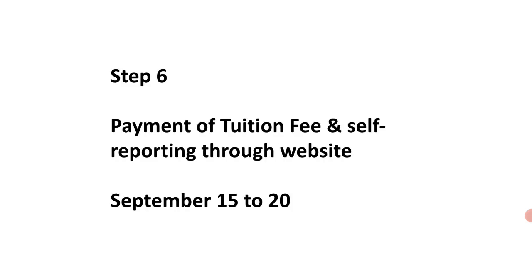After receiving your seat allotment order, you have to make payment of the tuition fee and do self-reporting through the TSMCET website, indicating that you are interested in taking admission in the college where your seat was allocated. Self-reporting starts from September 15th to 20th.